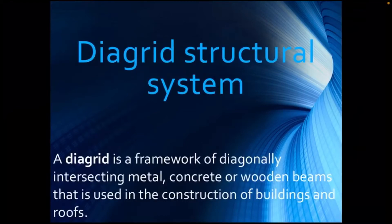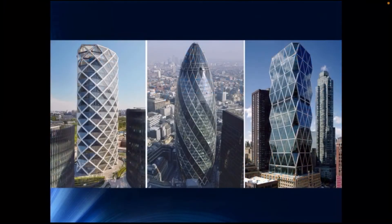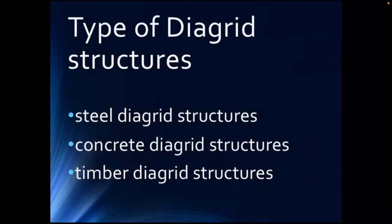A diagrid structural system is a framework of diagonally intersecting metal, concrete, or wooden beams used in the construction of buildings and roofs. As the name suggests, a diagrid is a diamond-shaped grid. It is a large structure that is effective under vertical load and lateral load and has aesthetic properties. The diagrid eliminates the need for columns and can be used to make large column-free expanses of roofing.